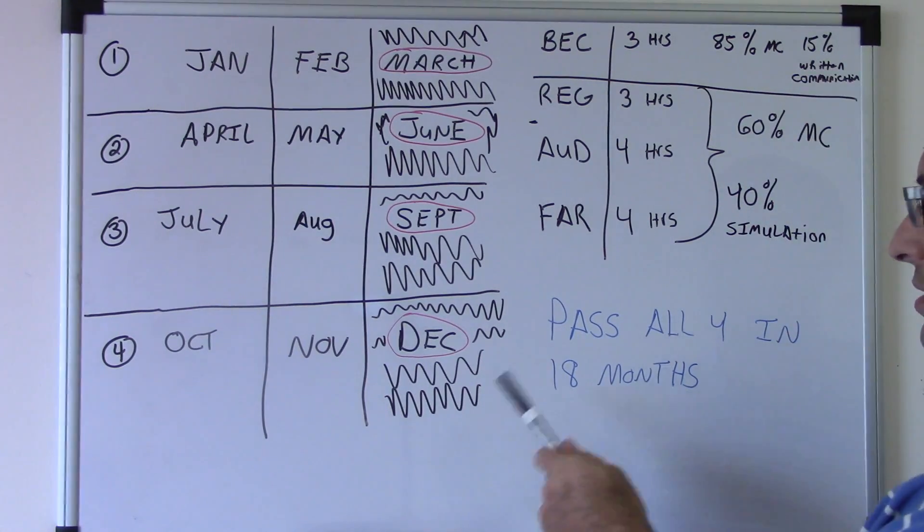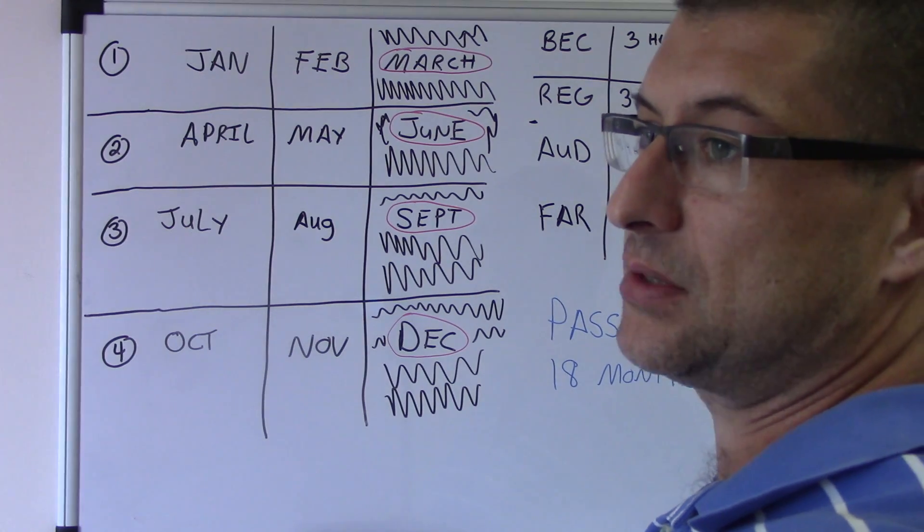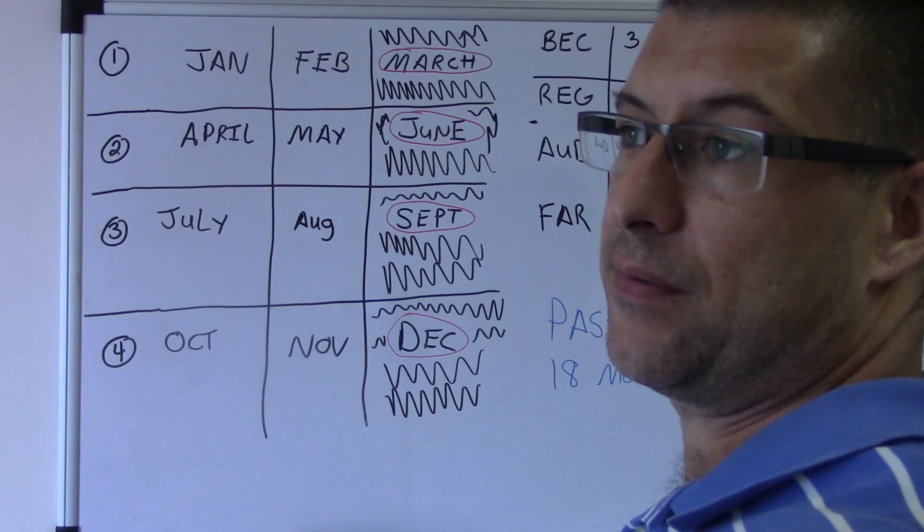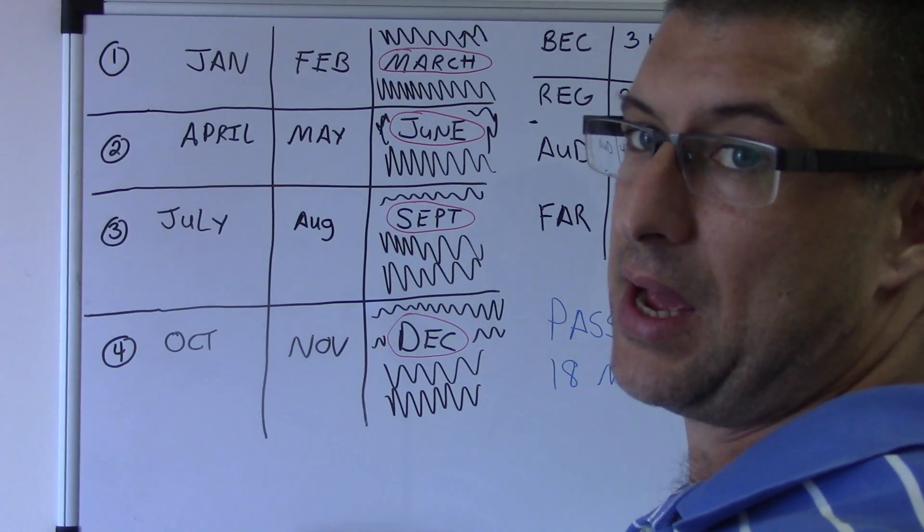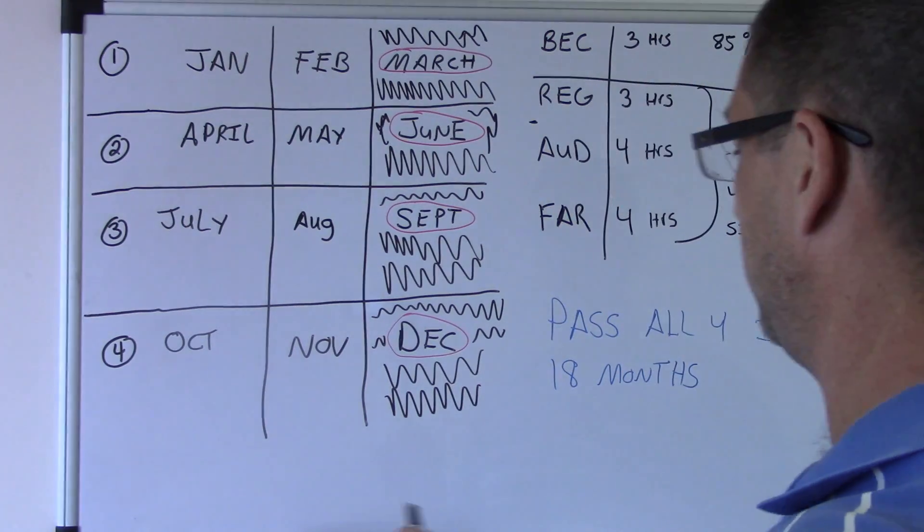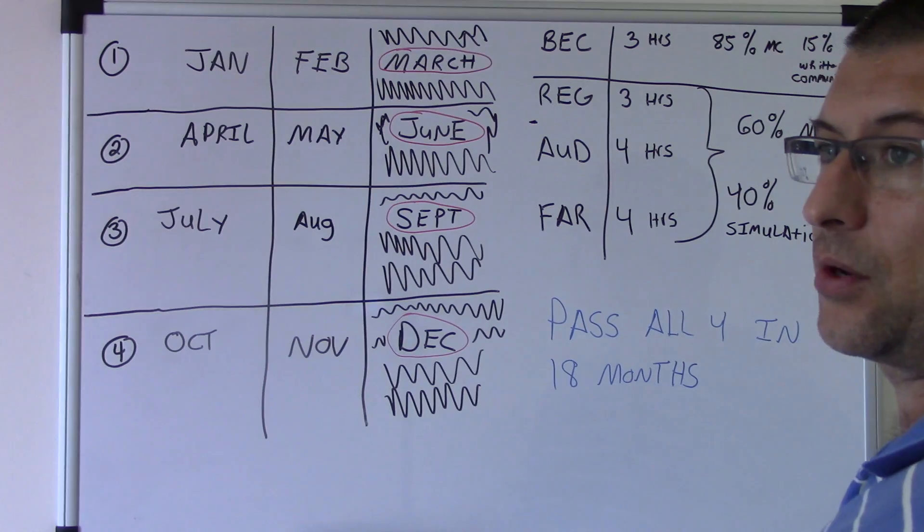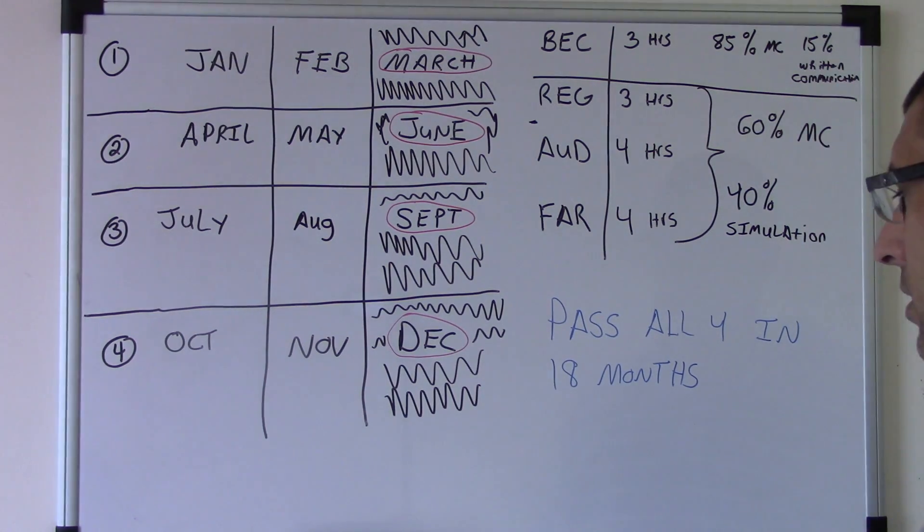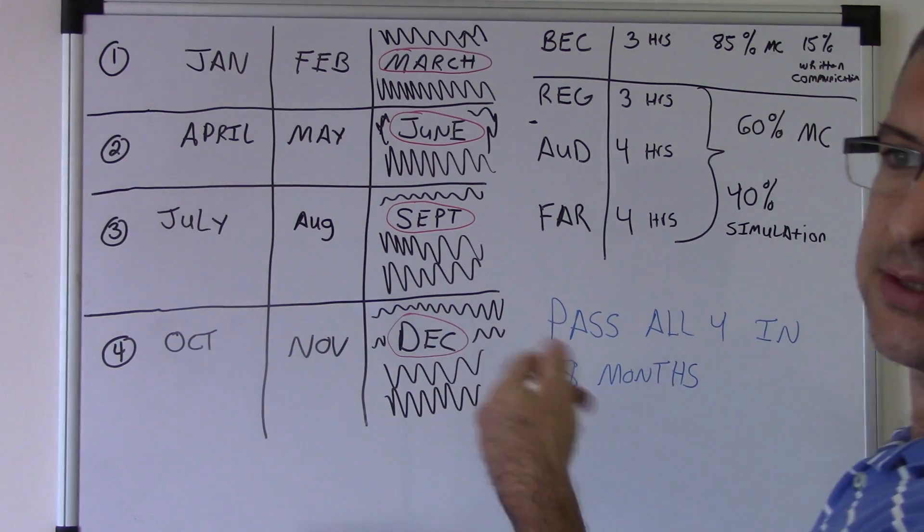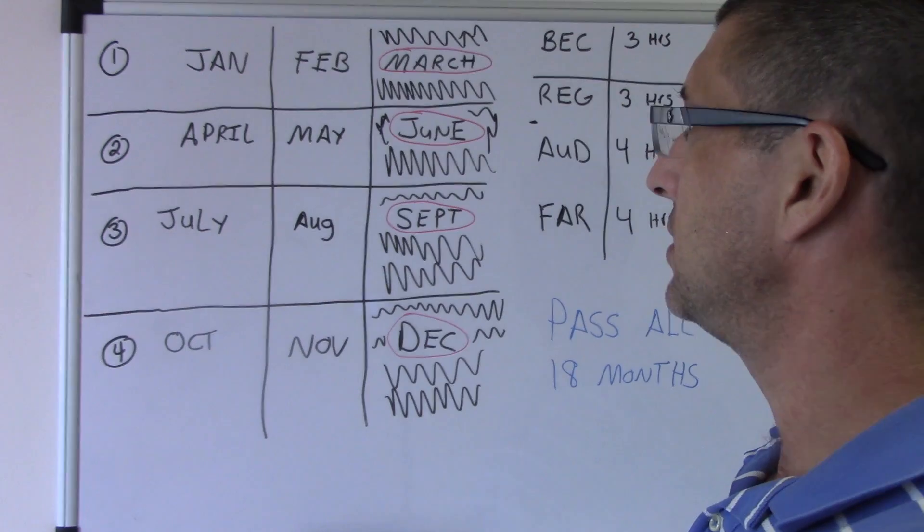So you have to pass all four in 18 months. So basically you pass your first exam, and then you have a year and a half to pass the other three. And if you don't, credits start expiring. Like let's say, we'll just leave it at that, credits start expiring after 18 months, so better pass it.